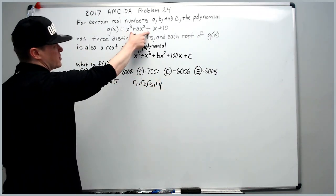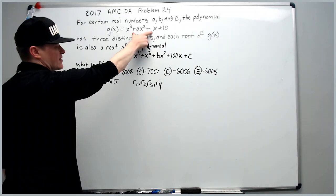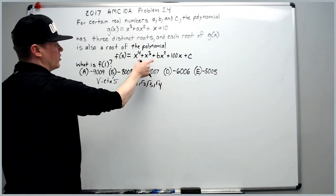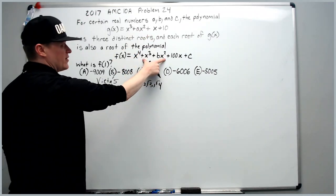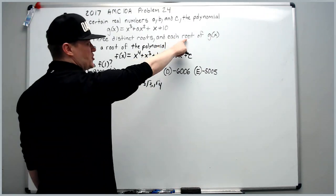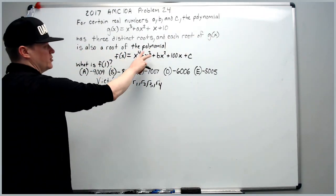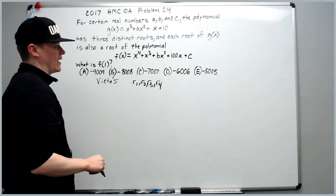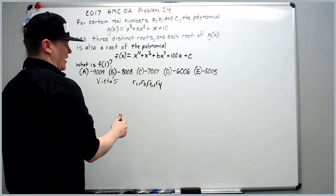The first three roots are only roots, and actually they're roots of g of x. I'll add r4 and the four roots will be roots of f of x because it says each root of g of x is also a root of this polynomial f of x. So we apply Vieta.